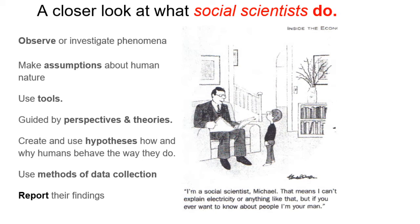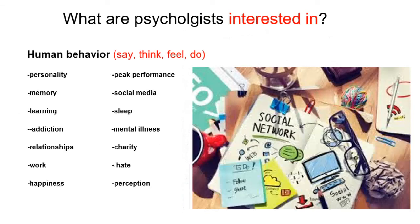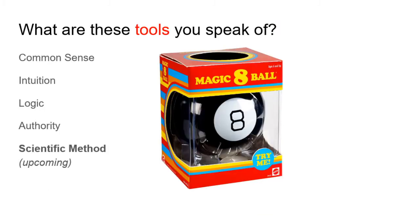If you recall, we've already talked about what psychologists are interested in. They're interested in a lot of the same things you're interested in: personality, relationships, charity, mental illness, hate. We also looked at the different tools that psychologists use in an effort to understand human behavior. And many of these tools look an awful lot like the ones you rely upon: common sense, intuition, logic, and appeal to authority, to name but a few.